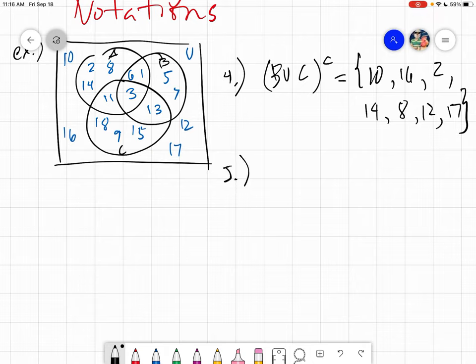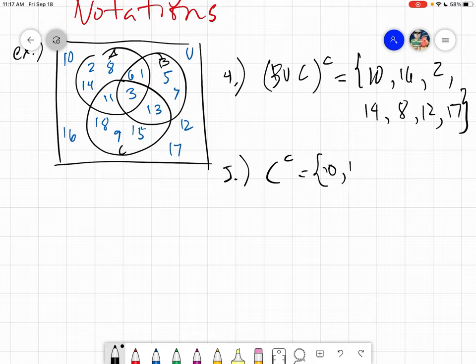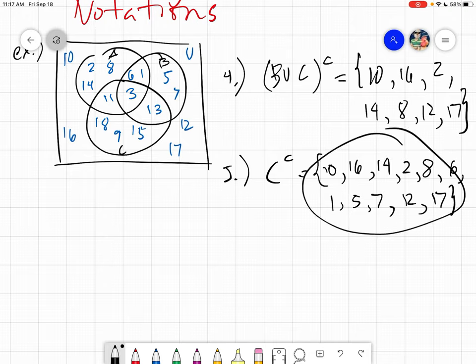Let's have another example. What if you're being asked what is C complement? C complement is just simply taking everything except for the elements of C. So let's shade C, and again you're taking everything except for the elements of C. So you take all of this. Your answer would just simply be everything but C, so 10, 16, 14, 2, 8, 6, 1, 5, 7, 12, and 17. And that would be your C complement.